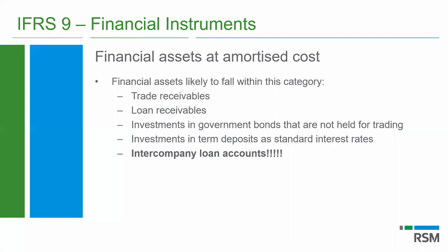A 32-day call account where you've deposited money and are collecting interest would fall under amortized cost. Your normal current accounts, which you use to daily transact, would fall under the fair value through profit and loss category. So when disclosing your financial statements, there may be a case where you need to split the classification of your cash or cash equivalents as reflected on your statement of financial position. An interesting one I've highlighted is your intercompany loans. Typically in South Africa, we often have in a group scenario intercompany loans that are unsecured, interest-free with no fixed terms of repayment.